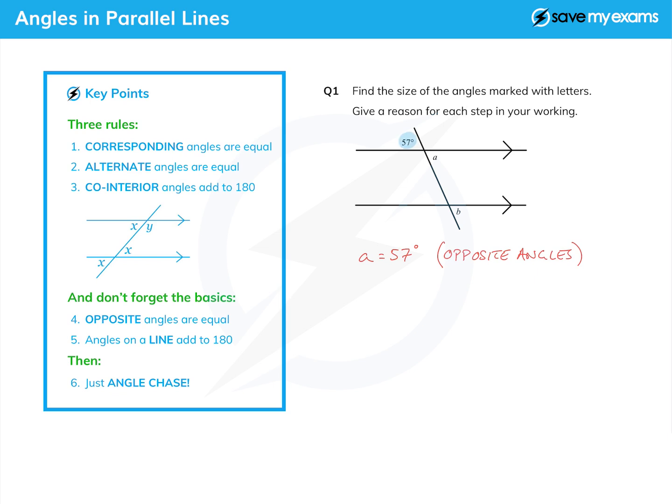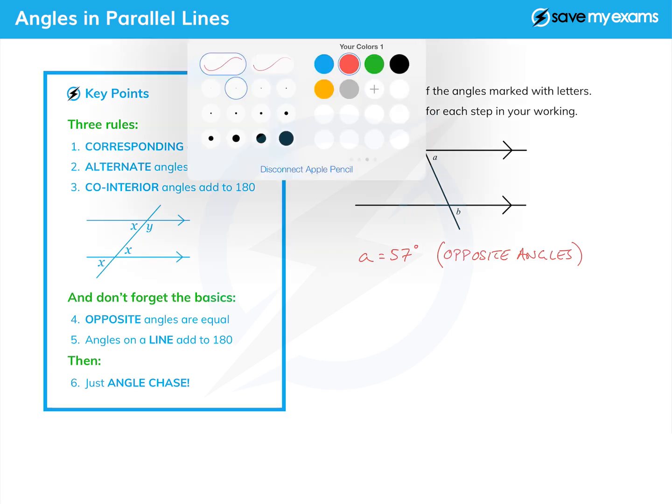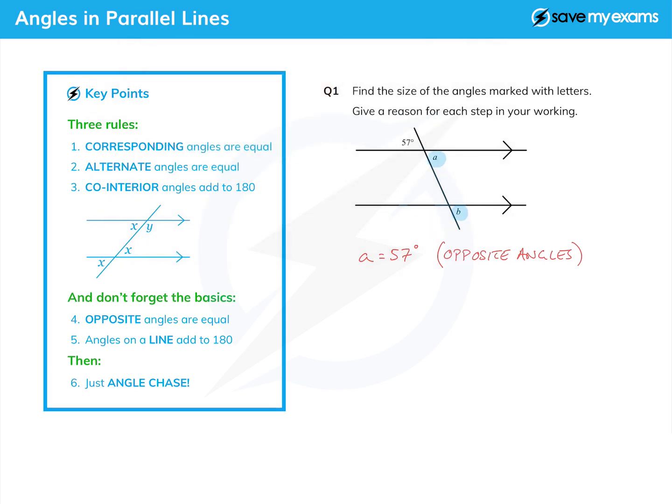Then how do we find b? Well, whichever way you want to do it - think of it as an F and remember it's corresponding angles, or just see that they correspond to each other. They are equal because they're corresponding angles, so b is also equal to 57. Here is my reason: corresponding angles are equal. And that is as simple as that.